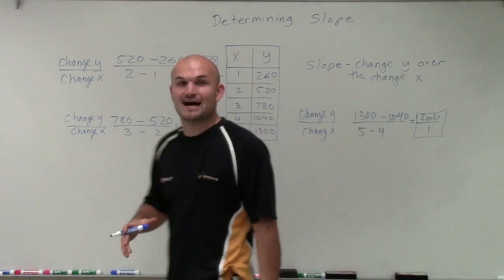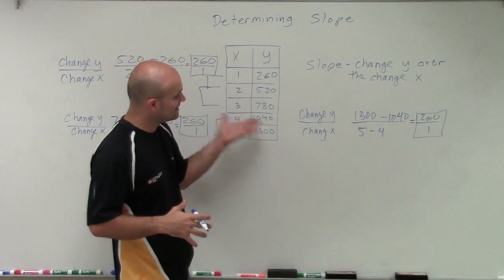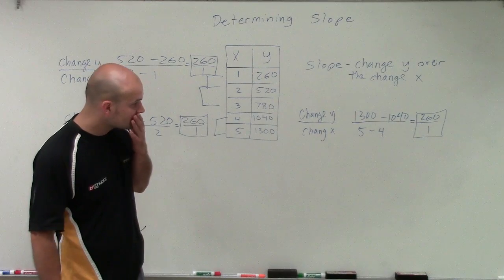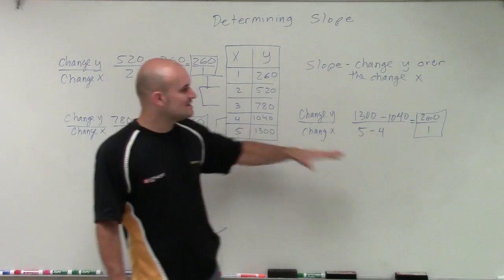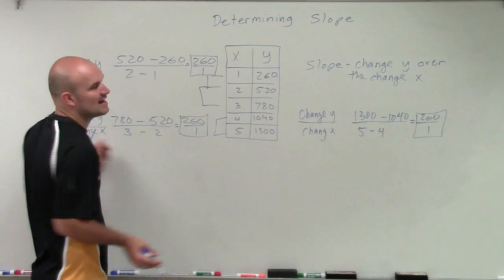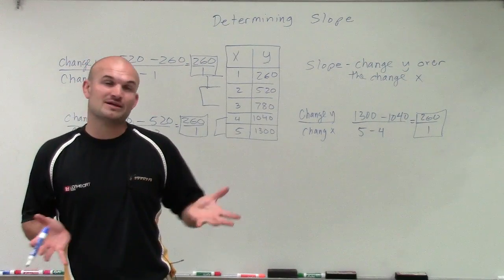Now I did this a couple different times, just so you could see that this is a linear equation. But also so you can see that since I have this constant, which is exactly the same, whenever I take the change of my y over my change of x,